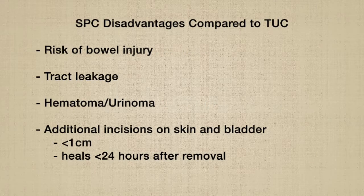Disadvantages of the suprapubic catheter include potential bowel injury, potential urine leakage along the catheter tract, potential hematoma or urinoma formation, as well as an additional incision on the skin and in the bladder that is only 1 cm wide and heals by 24 hours after removal.